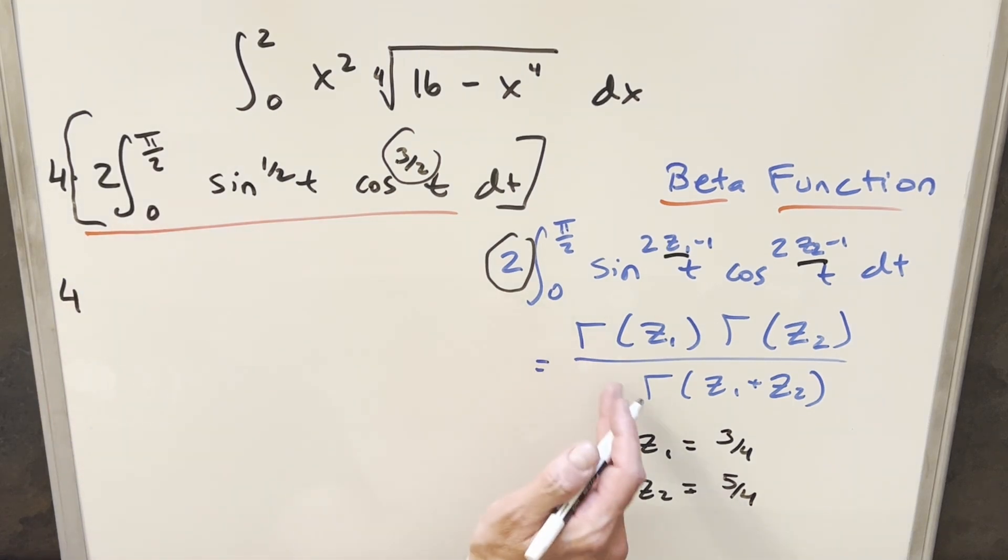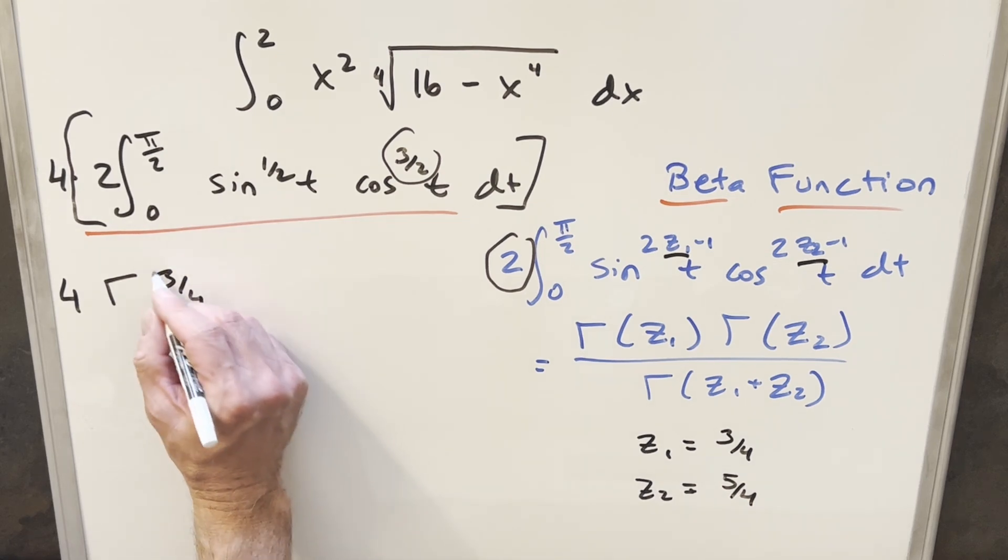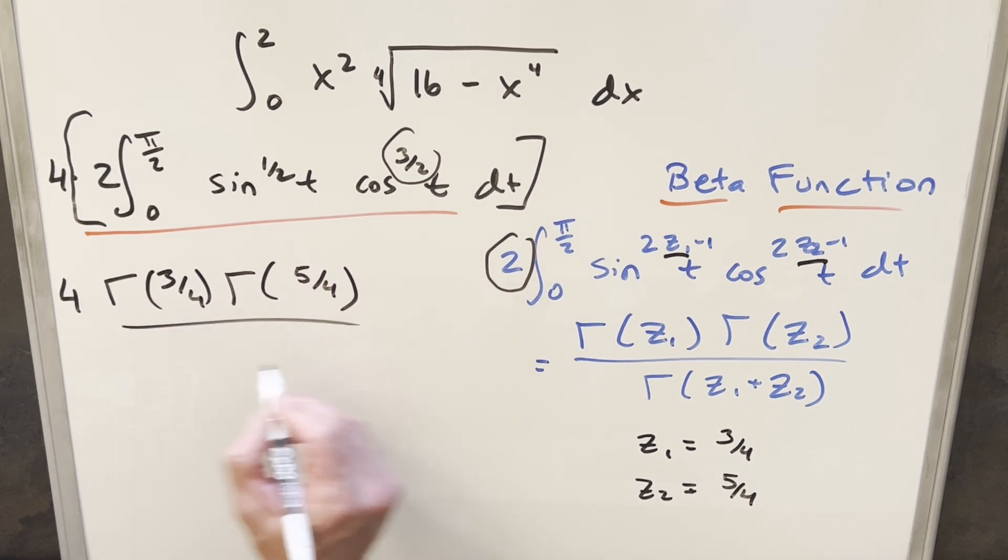And then for all this, we need to just plug in. So we're going to have gamma of our z1 value. So we're saying gamma of 3 over 4 times gamma of z2. So we want gamma of 5 over 4. And then we want gamma of the sum of the 2. Adding these up, you get 8 over 4 or just gamma of 2.